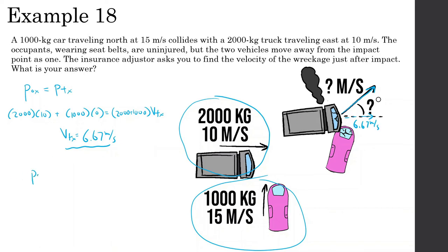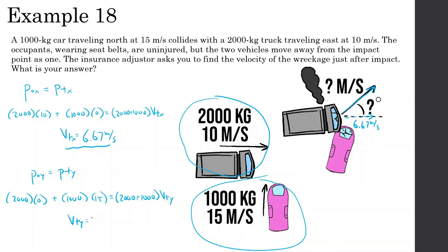Now the y-direction: momentum initial y equals momentum final y. The 2,000kg truck has zero y-velocity. The 1,000kg car is going 15 m/s upward, so positive 15 in the y direction. After they collide and stick together (3,000kg), the final y-velocity = (1,000 × 15) / 3,000 = 5 m/s.